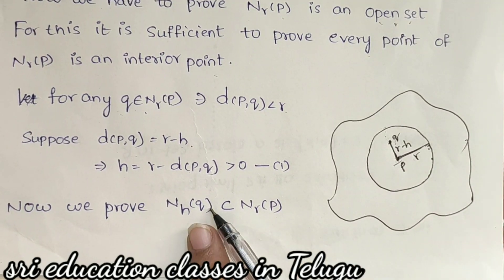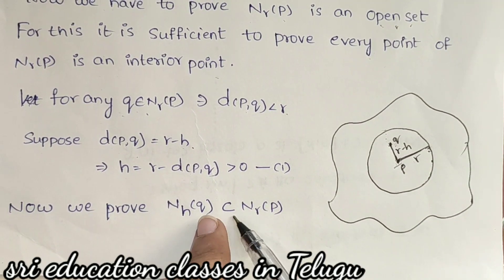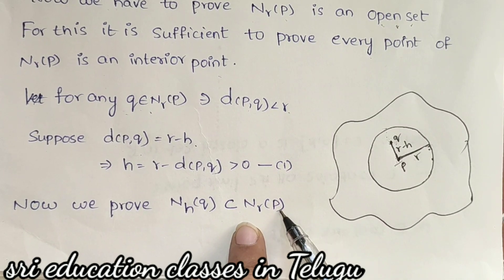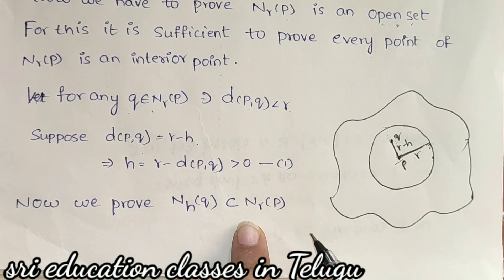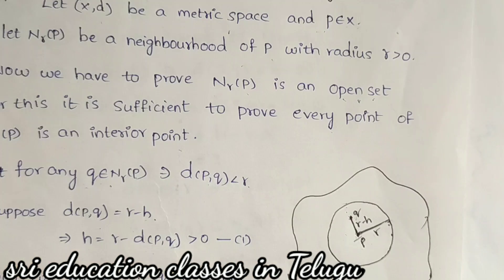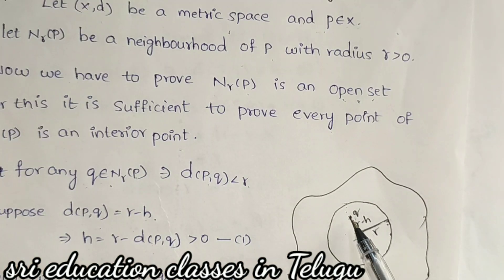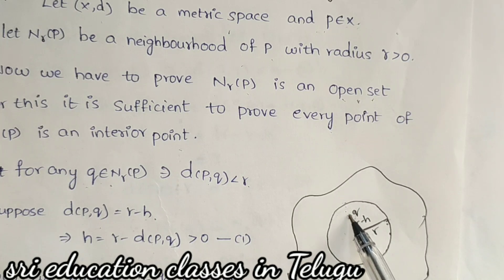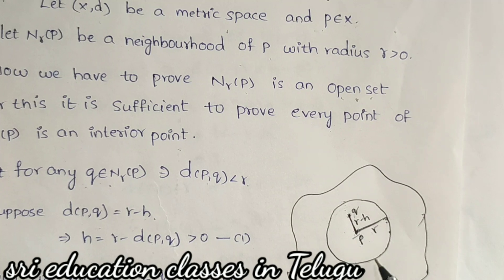The neighborhood of q is entirely contained. The neighborhood of p is equal to p. The neighborhood of q is equal to p.